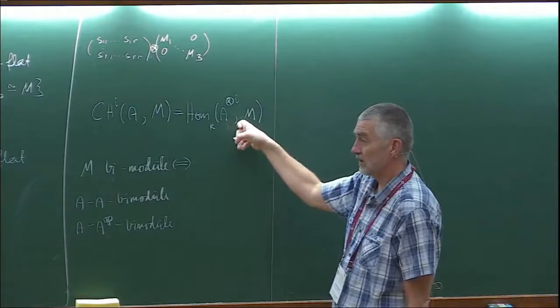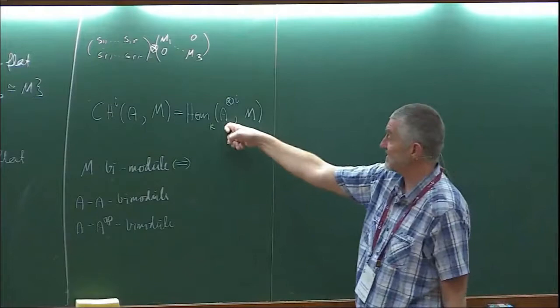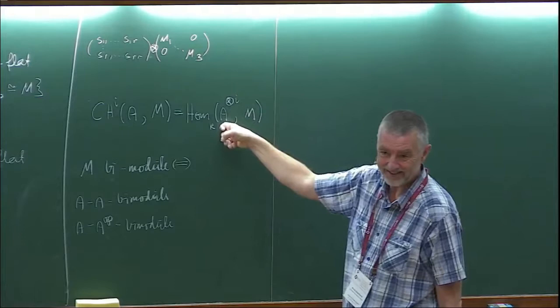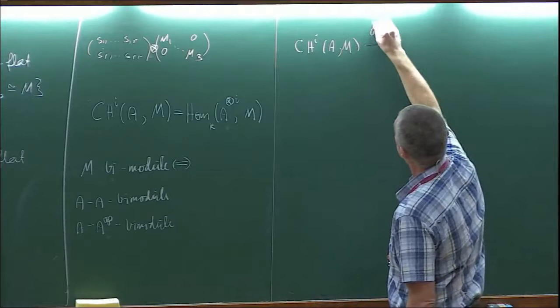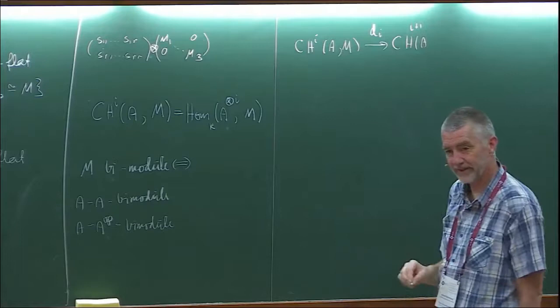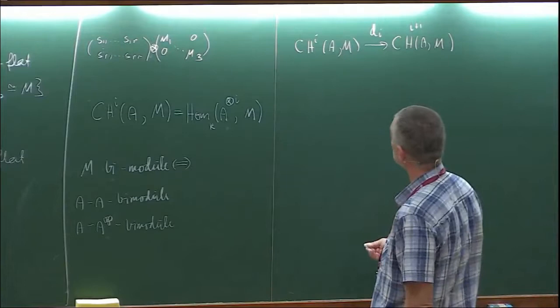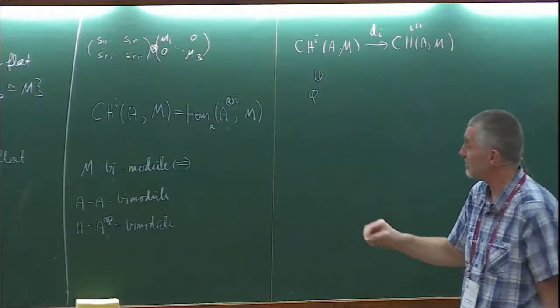As long as I'm working with only right modules, this works well. The only point is that we have multiplications from the left and from the right, and it is associative. For those who are scared about the tensor sign, just remember that this is the same as K-multilinear mappings. So I need a mapping from C^i(A, M) — that is d^i going into C^{i+1} of M.